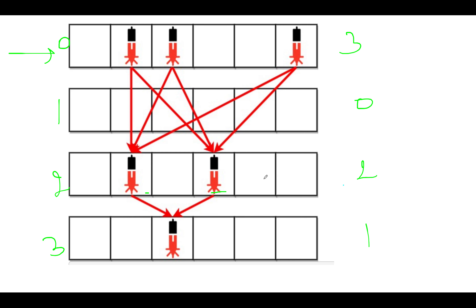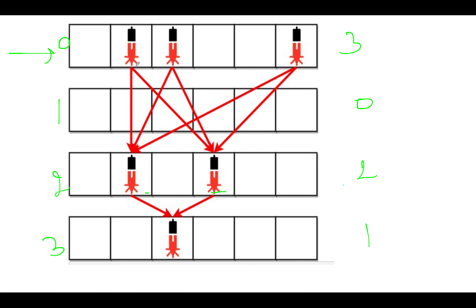We need to identify the number of beams that exist in the entire bank. A beam will be placed from each security device in a particular row, and it will terminate at each device in the next upcoming row that has devices. For example, there are no beams placed in the first row, so we'll skip it. We have security devices placed in the second row, so a beam will originate from each security device in the previous row, which is the zeroth row.